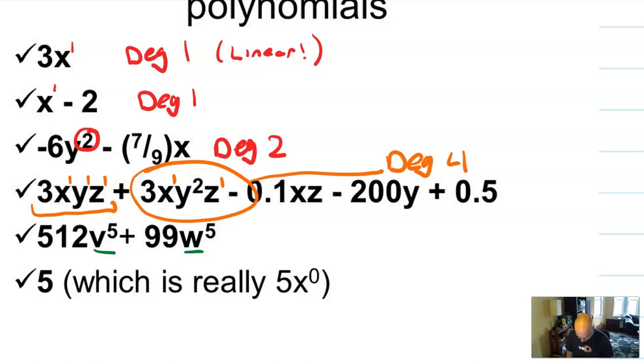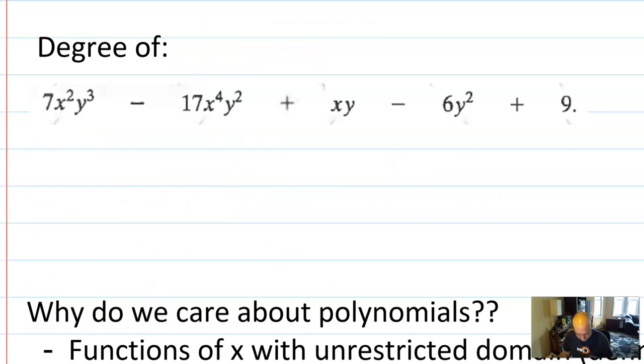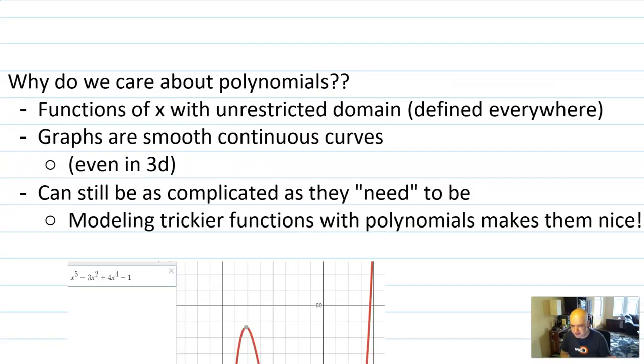But you don't add them up between terms. We have a v to the fifth and w to the fifth. This is degree 5. And 5 here is a degree 0 polynomial, which we call a constant polynomial. So that's kind of how you approach degree. You can put yourself to the test here. Look at the polynomial on the screen and say to yourself, what is the degree of this polynomial?